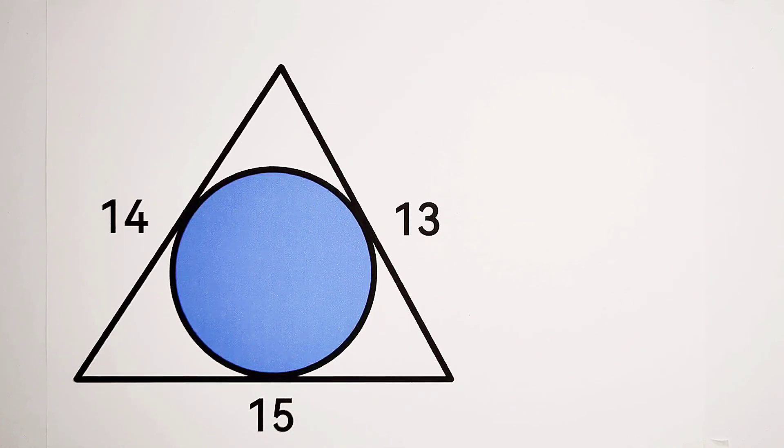For solving for the area of the circle, firstly we have to consider to solve for its radius. How shall we do that?